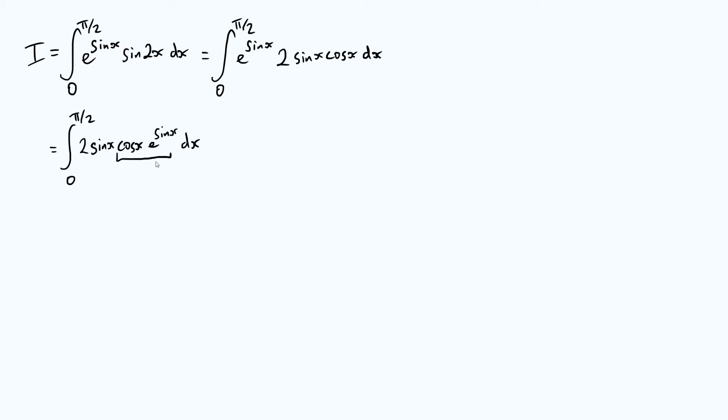And so this kind of hints that we can use integration by parts. Remember our integration by parts formula in general says if we've got the integral of u times v prime with respect to x, where v prime is the derivative of this function v, then that's equal to u times v minus the integral of v times u prime with respect to x.